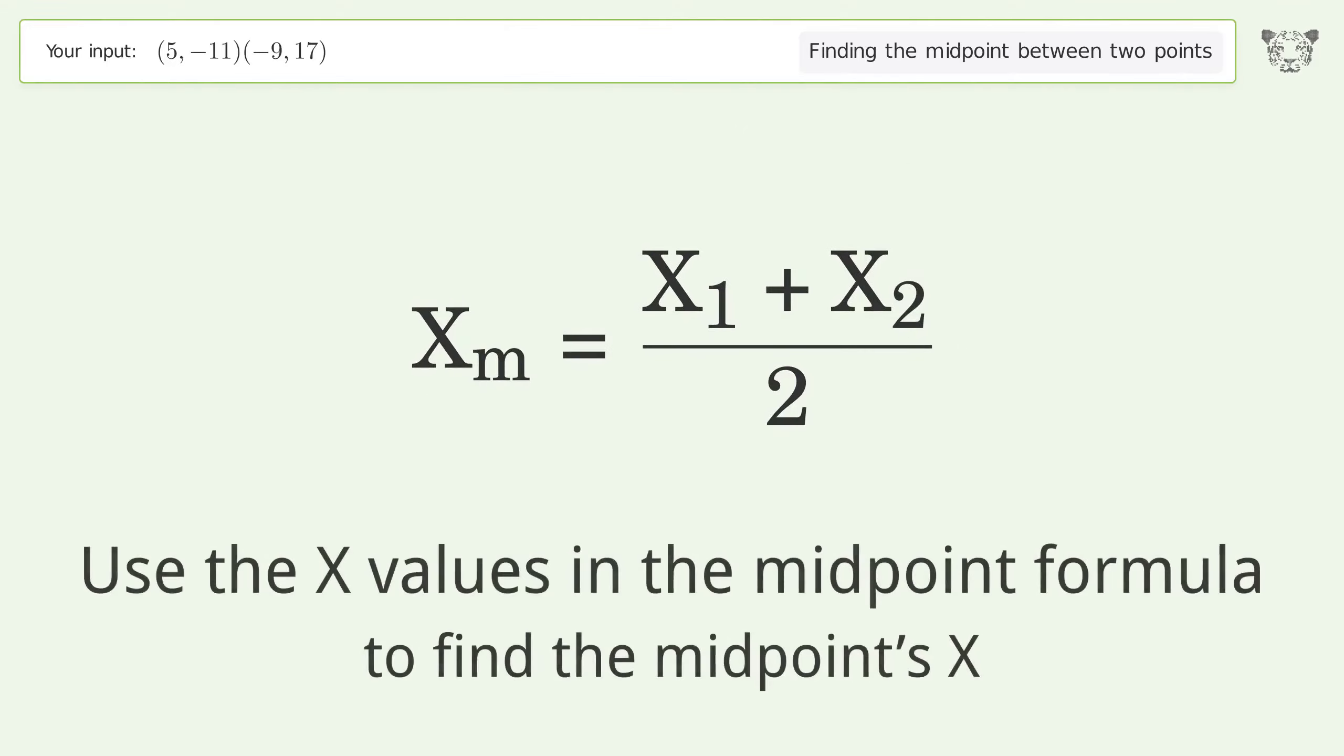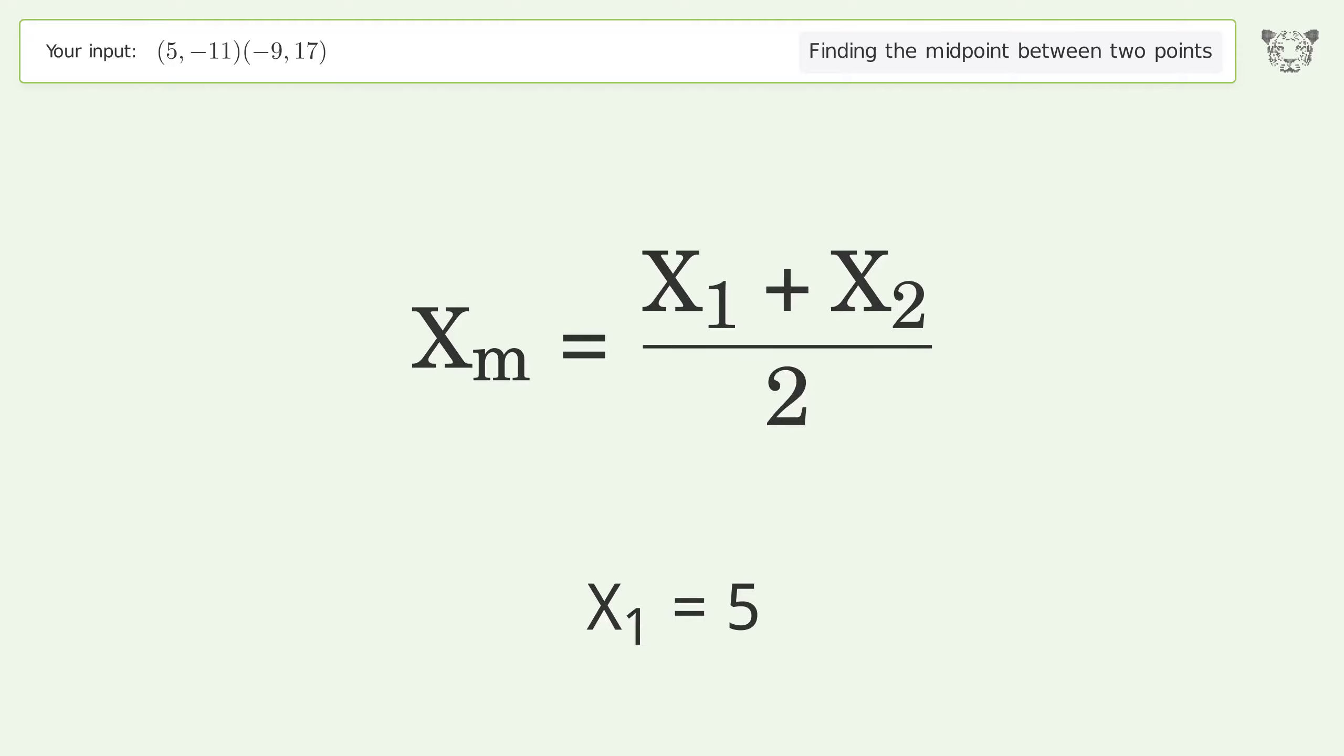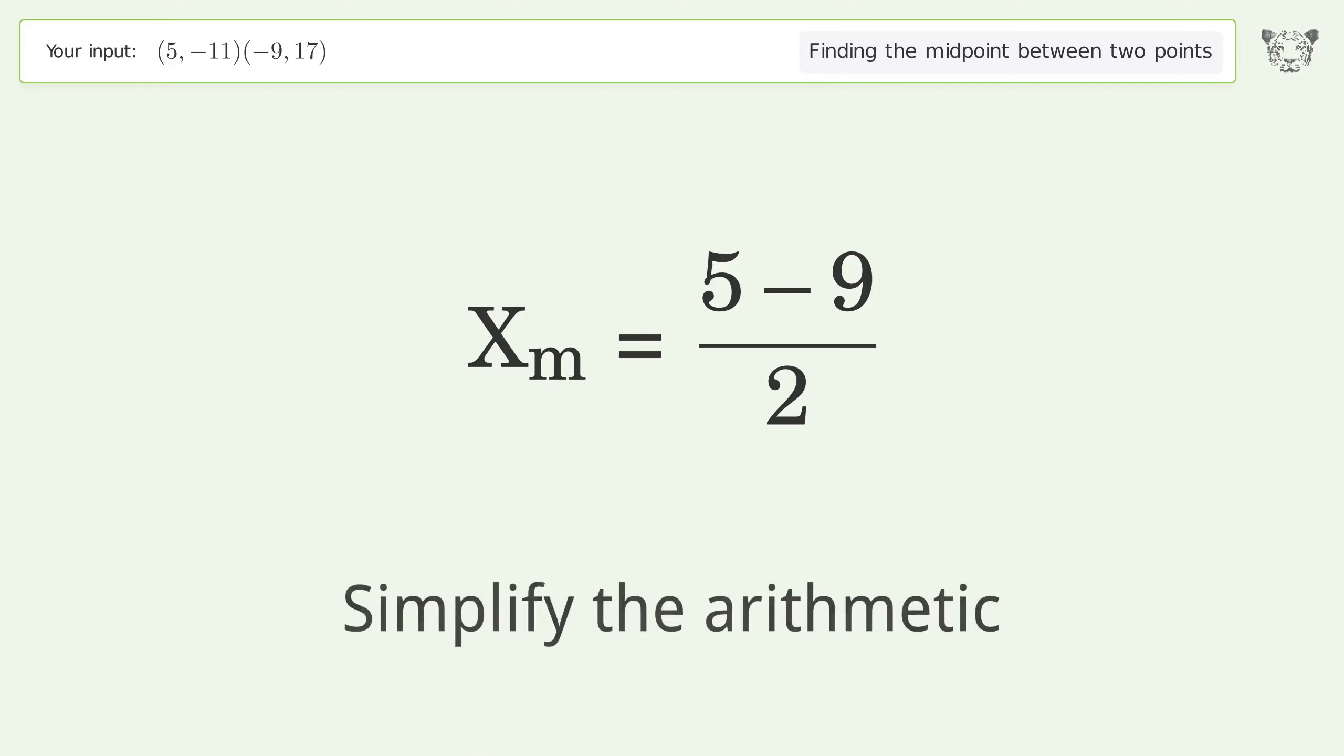Use the x values in the midpoint formula to find the midpoint's x. x1 equals 5, x2 equals -9. Simplify the arithmetic.